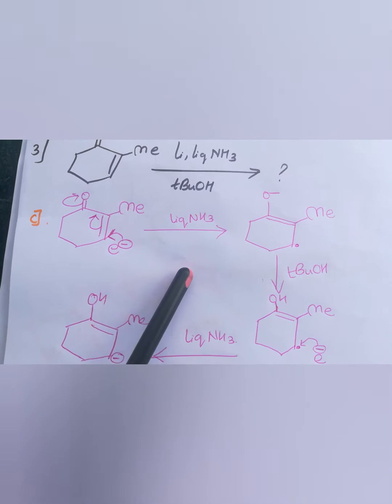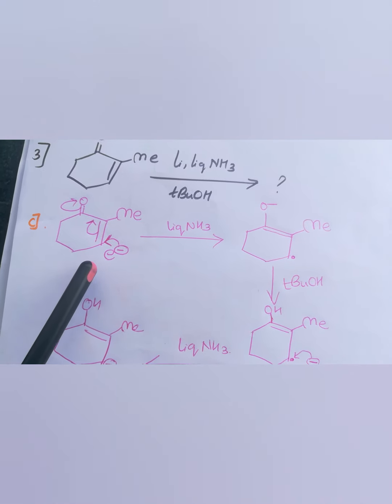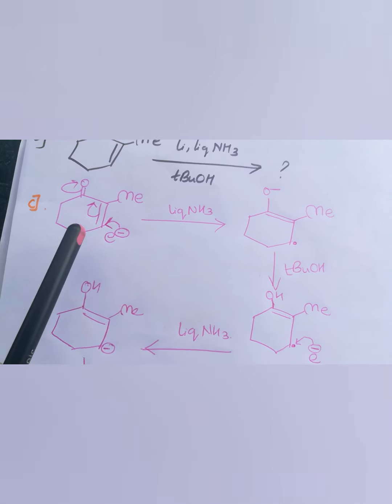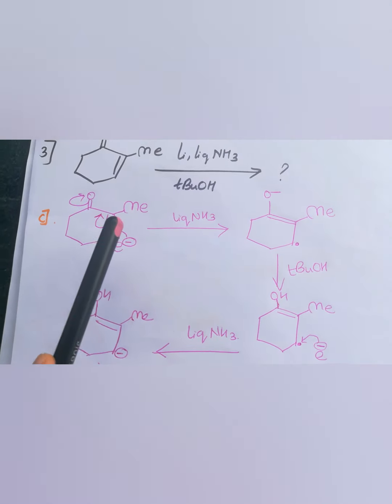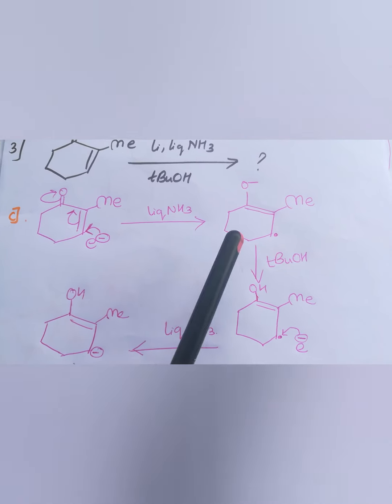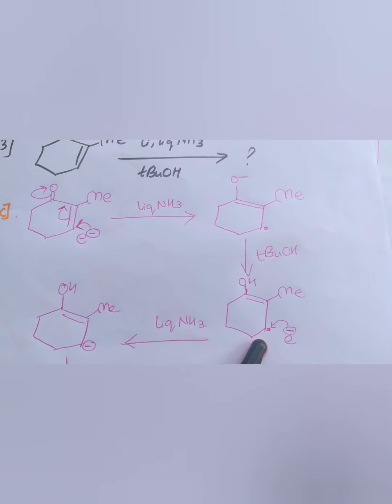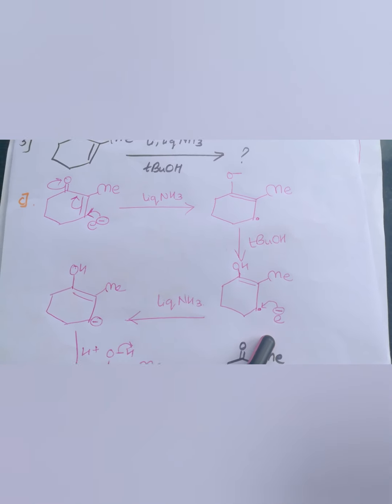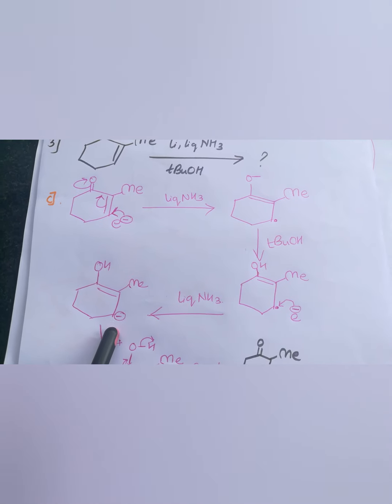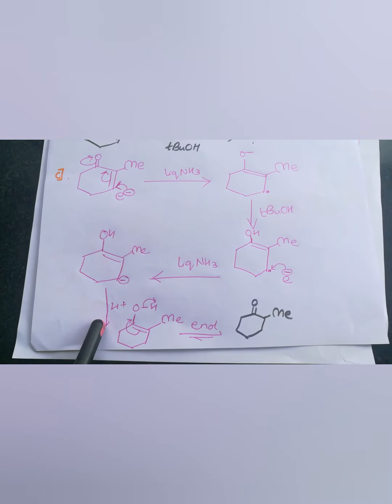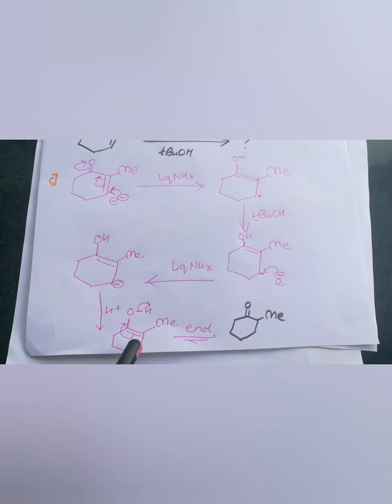We will see the mechanism of it. In presence of liquid ammonia, there is formation of radical. Also, we know that methyl is a donor group, therefore there must be a bond formation between OH and Me. To neutralize this radical, there is an attack of electron to form a negative charge. In H plus, that will lead to OH and stabilize that with H. As we know, there is an alpha beta unsaturated bond. Therefore, it will undergo enolism or tautomerism to form the product.